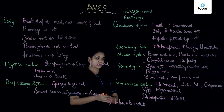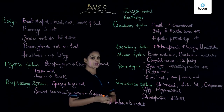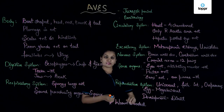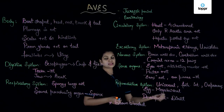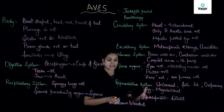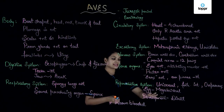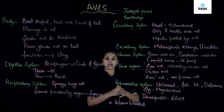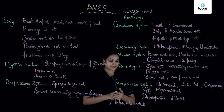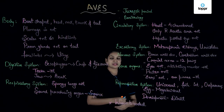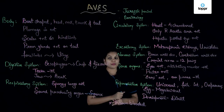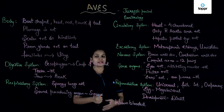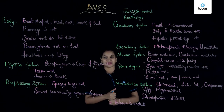Birds are unisexual. Fertilization in them is internal. They are oviparous, meaning they lay eggs, and their eggs are megalecithal — they have a lot of yolk. Development is direct, which means they do not form any larval stage. Birds are the first warm-blooded animals.